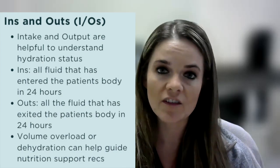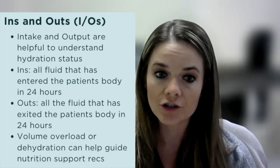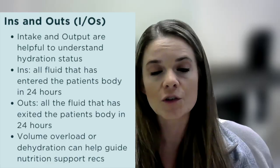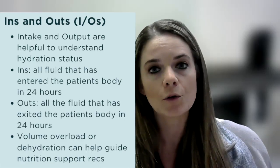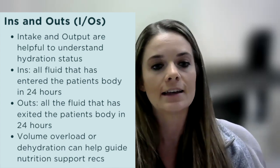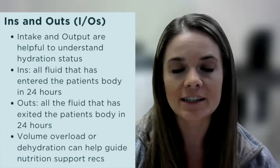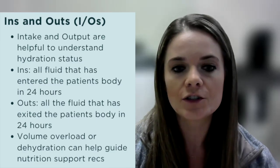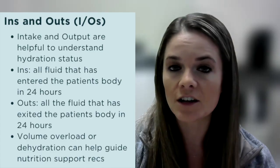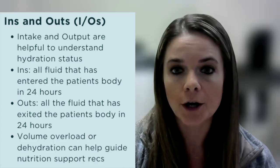Another piece of information you can find from the ICU flow sheet is ins and outs, which are important to record in your nutritional assessment as they give you a picture of a patient's hydration status. The nurse records all fluids entering and exiting the patient's body over 24 hours. If a patient is volume overloaded by several liters, you may want to consider a volume-restricted tube feeding formula. If a patient is negative several liters of fluid, they may be considered underhydrated, and you may choose a formula with more free water or increase free water flushes.